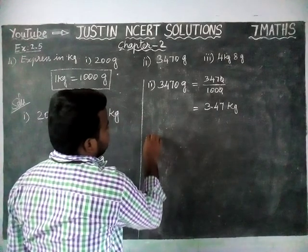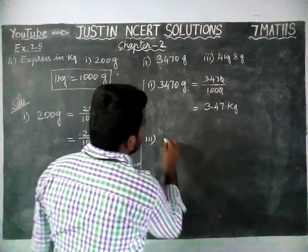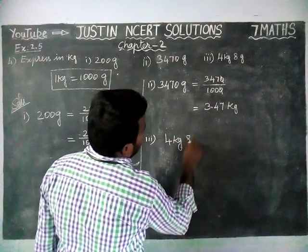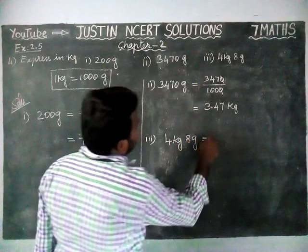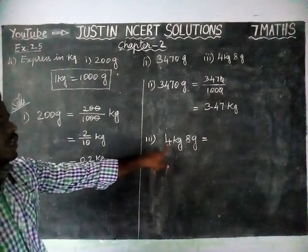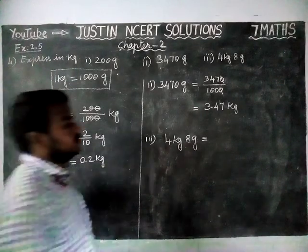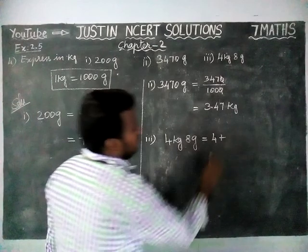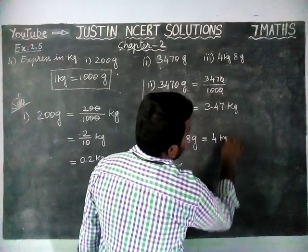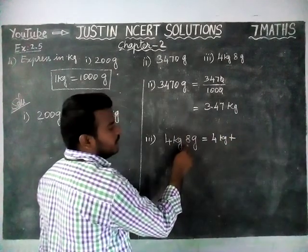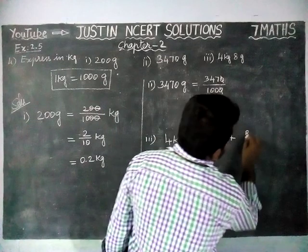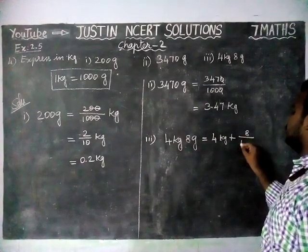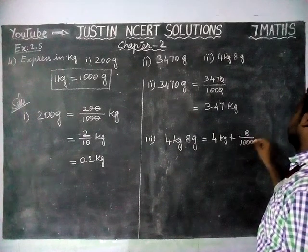Third question: 4 kilogram 8 grams is equal to. The 4 kilogram is already in kilograms, so no problem. We can write it as 4 kilogram plus 8 grams. Since 1 kilogram is equal to 1000 grams, we are going to divide the 8 grams by 1000 kilograms.